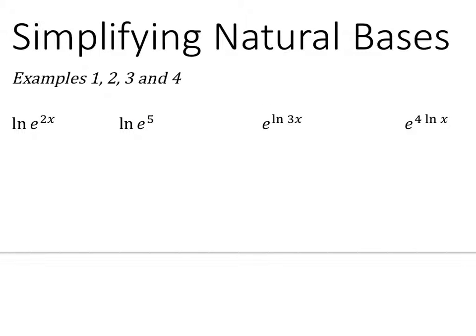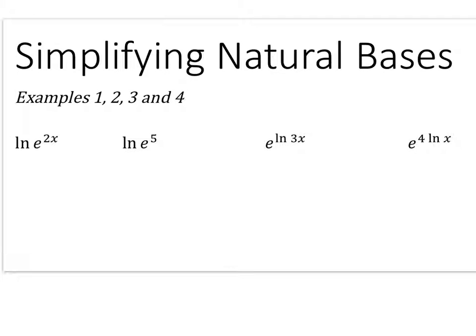So what we're going to start with is simplifying natural bases. This is going back to our last unit where we had to simplify all different exponentials and logs. So if you look here I have a natural log of e to the 2x. This uses my property that bases that match cancel because this exponential is base e and this log has base e. So this just simplifies down to 2x.